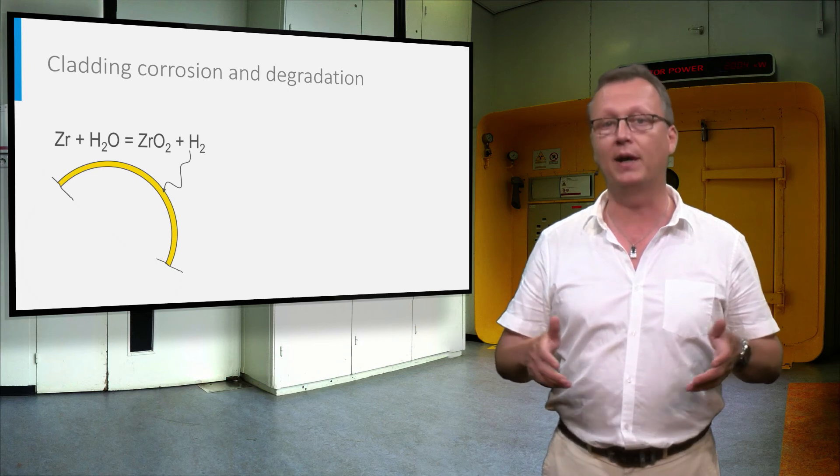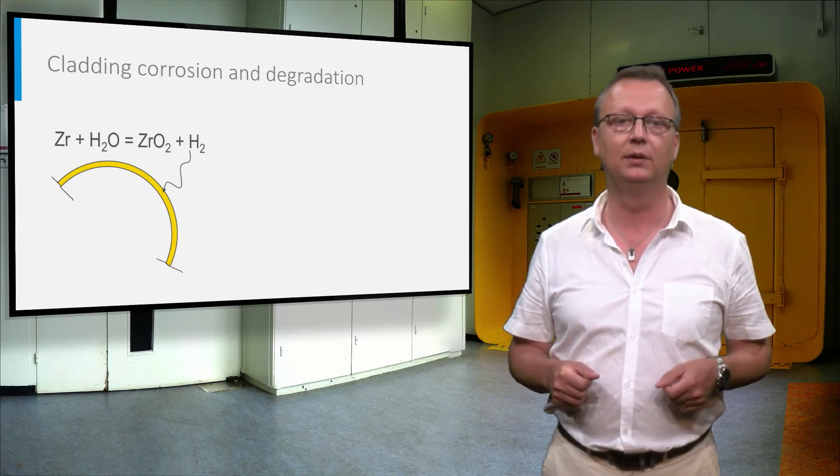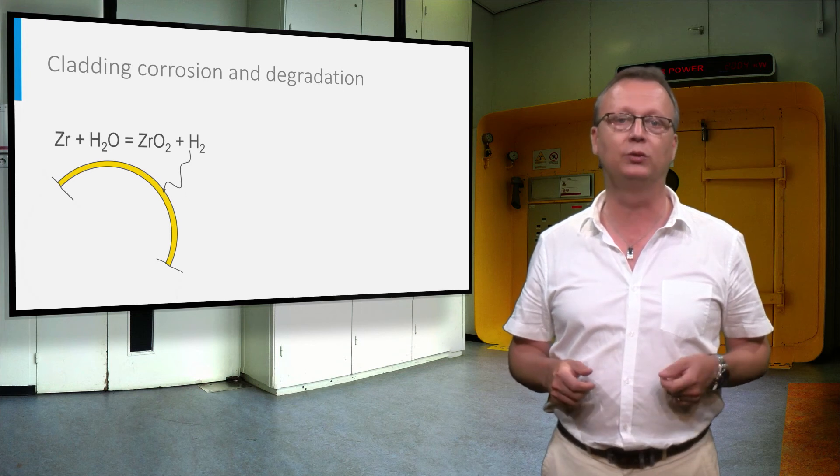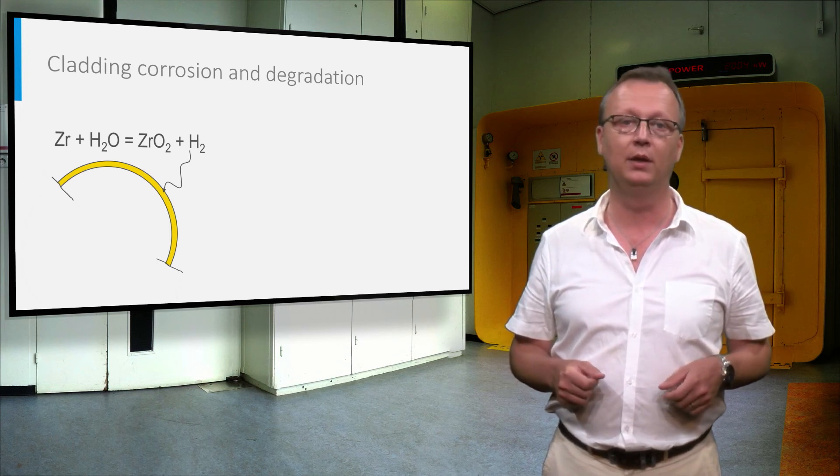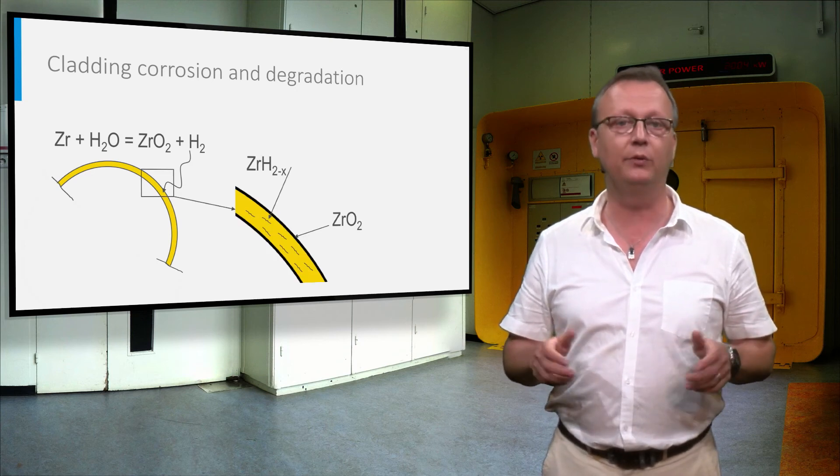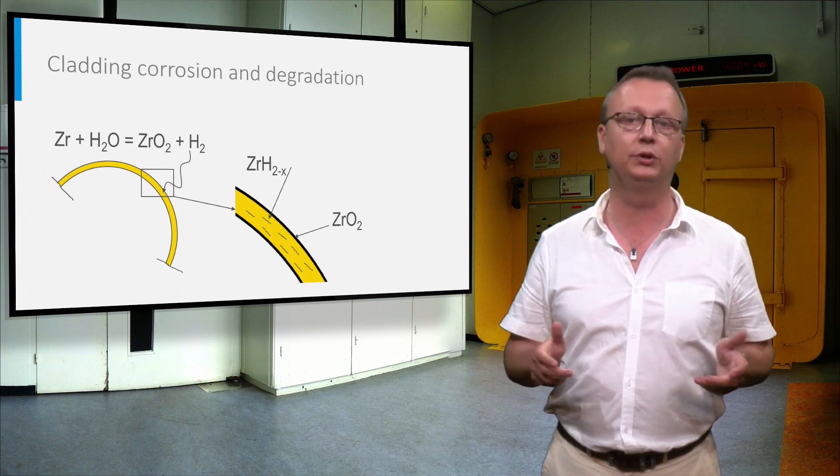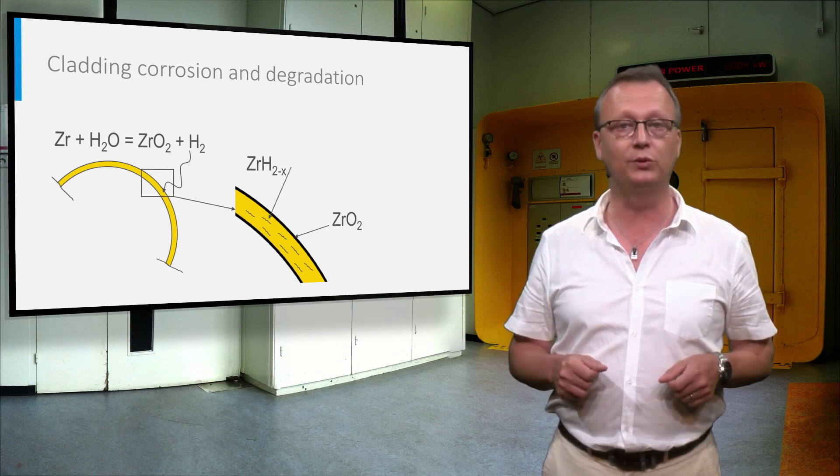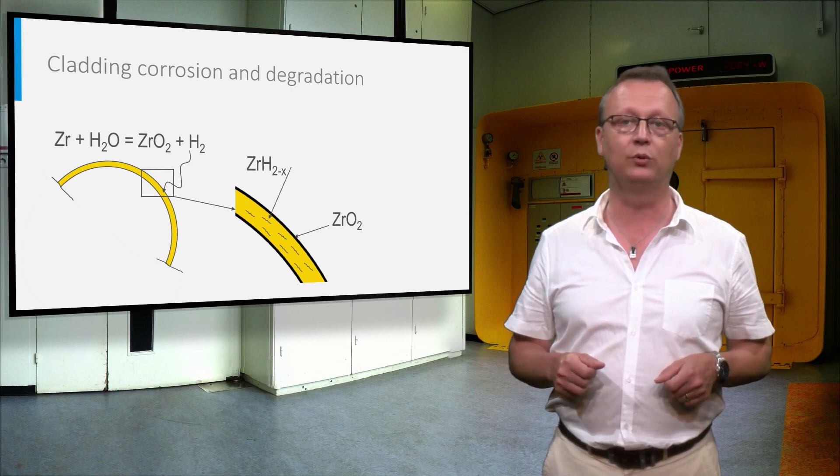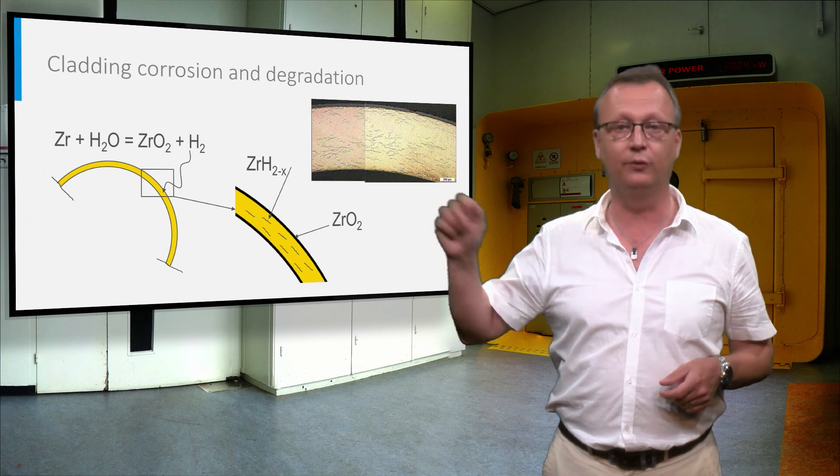Another limiting factor is the corrosion and degradation of the cladding from the water side. This high-temperature pressurized water is corrosive towards the zirconium alloy, and a zirconium oxide layer is formed. In a chemical reaction, the metal binds the oxygen from the water and sets free hydrogen, which diffuses into the metal and forms zirconium hydride, which can be seen as a worm-like precipitate in the photograph.